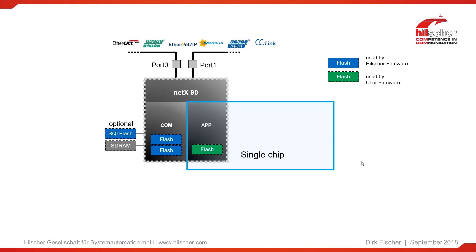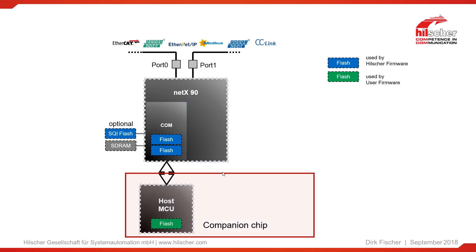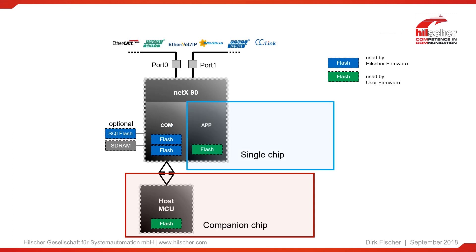Before we go into detail, let's have a look at the flash blocks available. The green block is used for the application, and we do not distinguish whether this is located inside the NetX 90 or if we use an external host microcontroller — the Hilscher firmware does not care. Therefore we want to concentrate on the blue colored flash blocks: the internal flash for the communication side and optionally the external SQI flash. Use cases A and B use just internal flash memories.